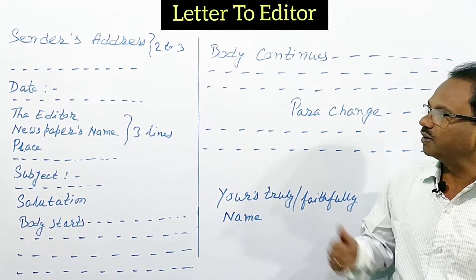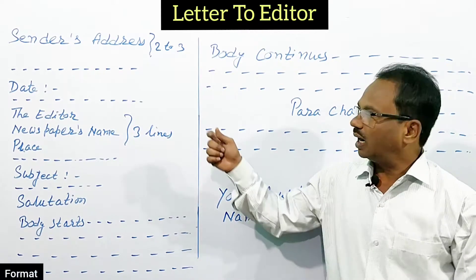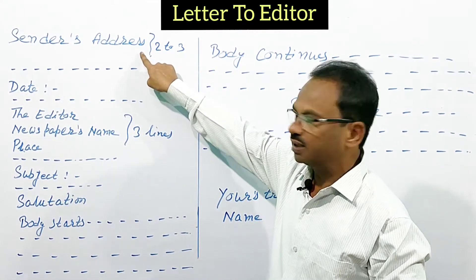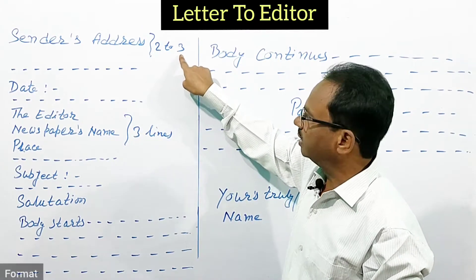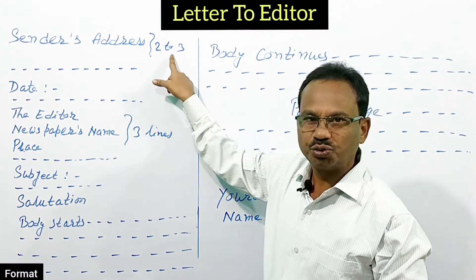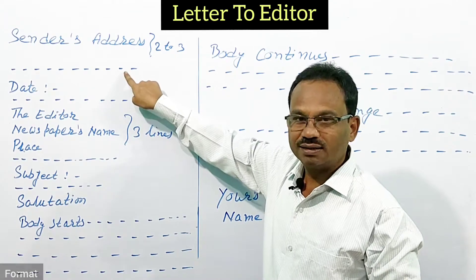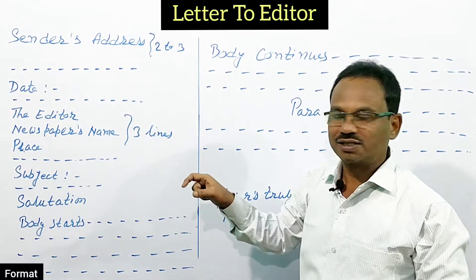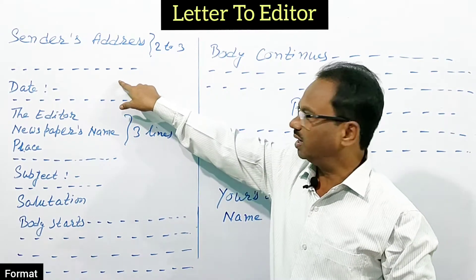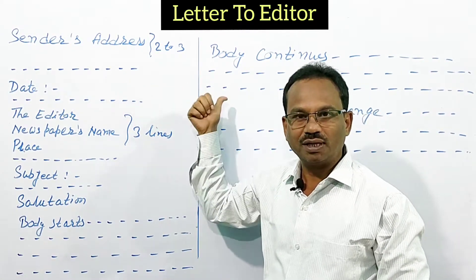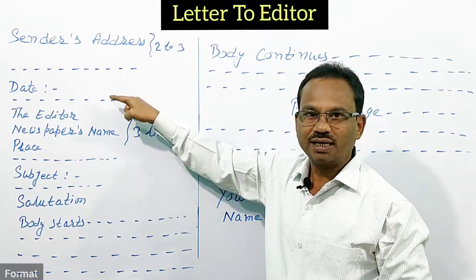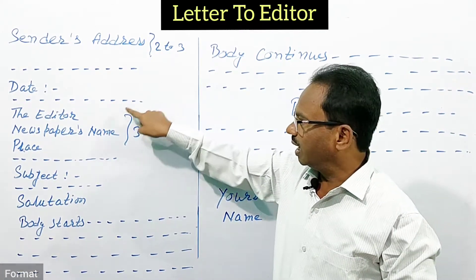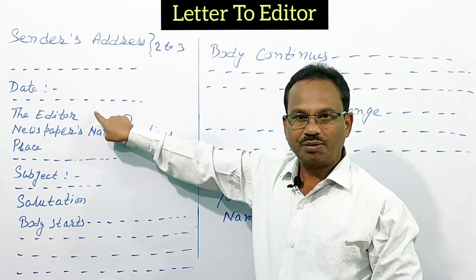Here is a simple format of letter to editor. First of all, the sender's address should be written in two to three lines, and then you leave a line. After that, you have to write the date, and never use slashes when writing the date. When I show you the sample, you will understand exactly how to write the date.